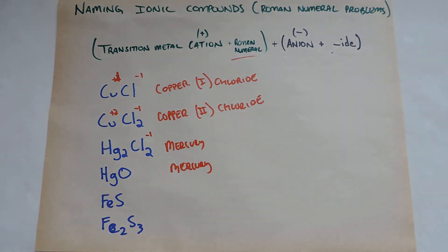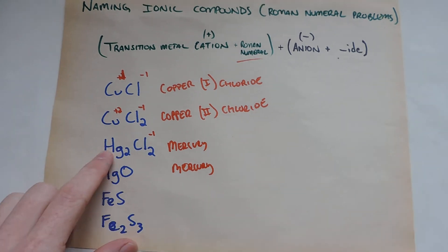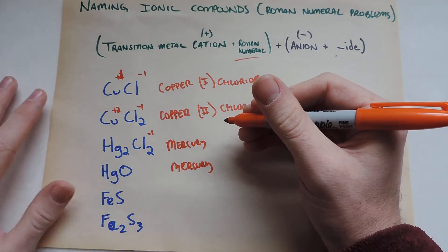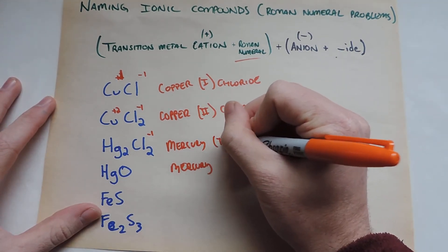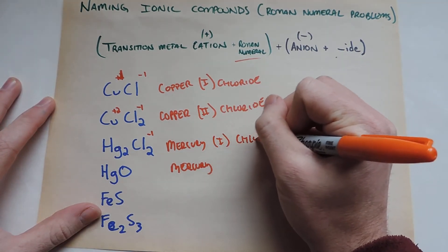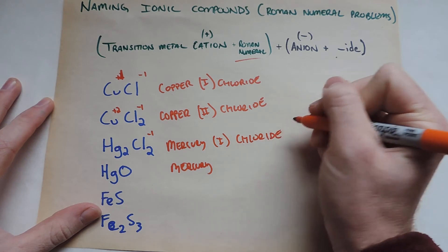Okay, now we're going to look at chlorine, which is minus one. But there's two of them. So, but there's also two mercuries. So we're going to have to account for that. So this is going to be mercury one chloride.